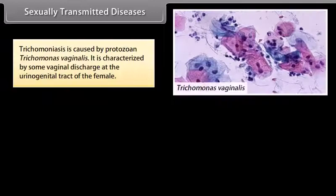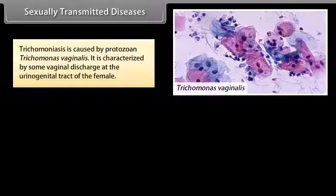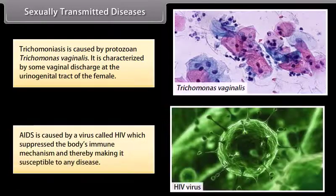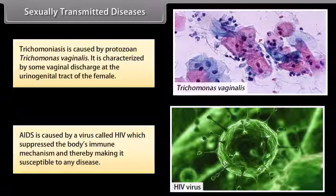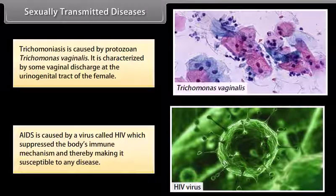Trichomoniasis is caused by the protozoan Trichomonas vaginalis. It is characterized by vaginal discharge at the urinogenital tract of the female. AIDS is caused by a virus called HIV, which suppresses the body's immune mechanism, thereby making it susceptible to any disease.